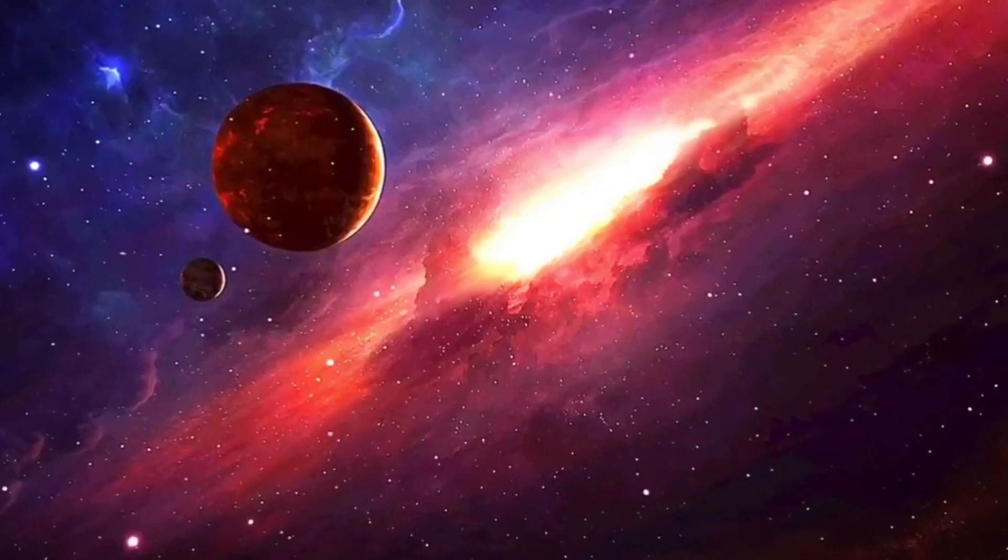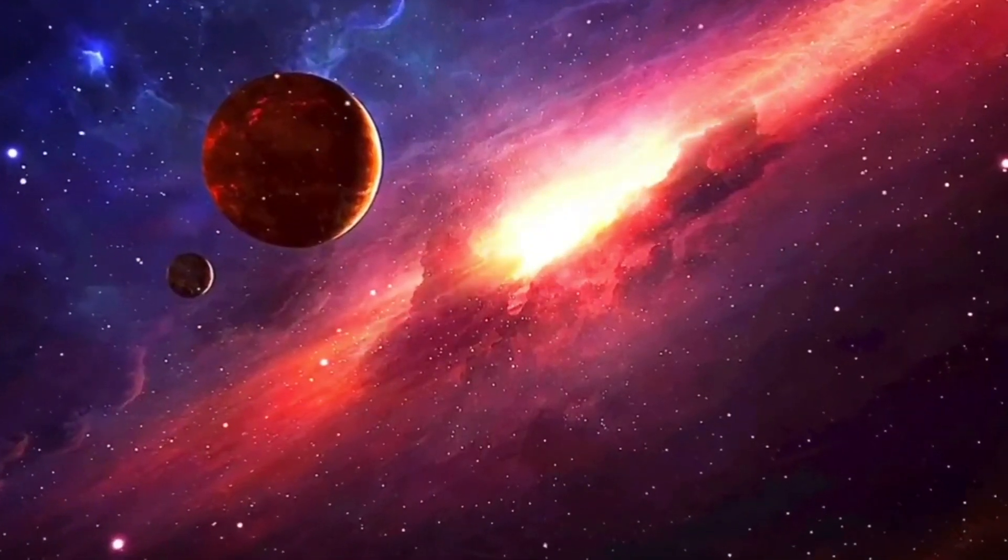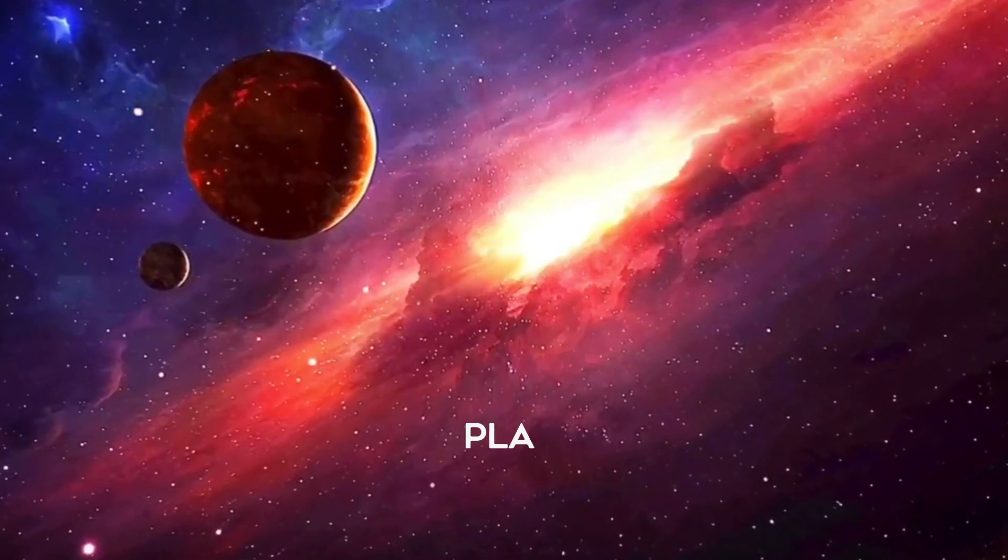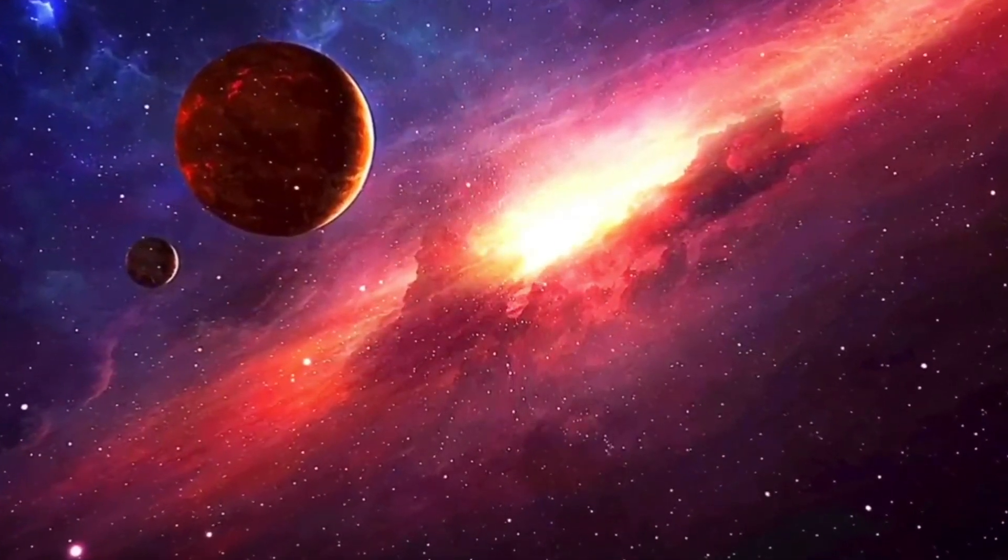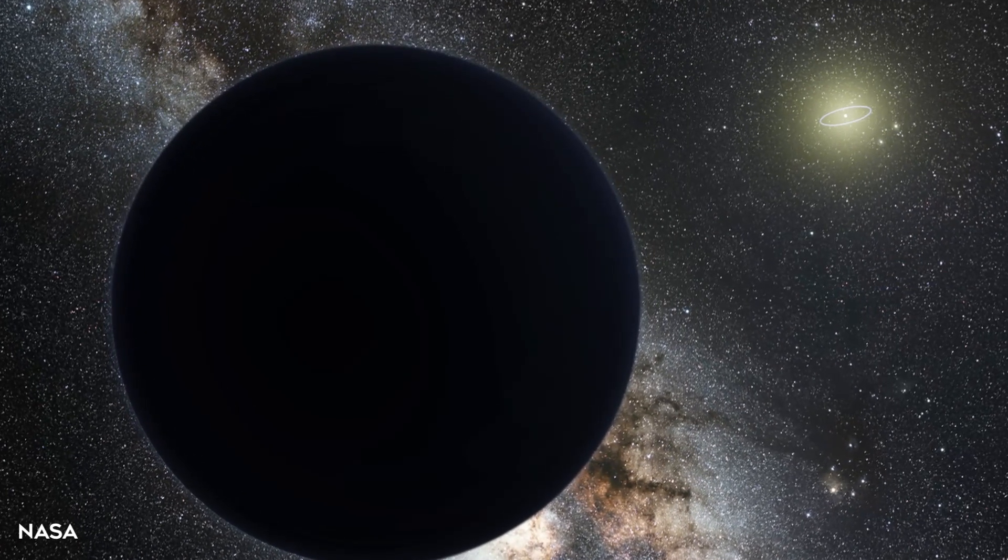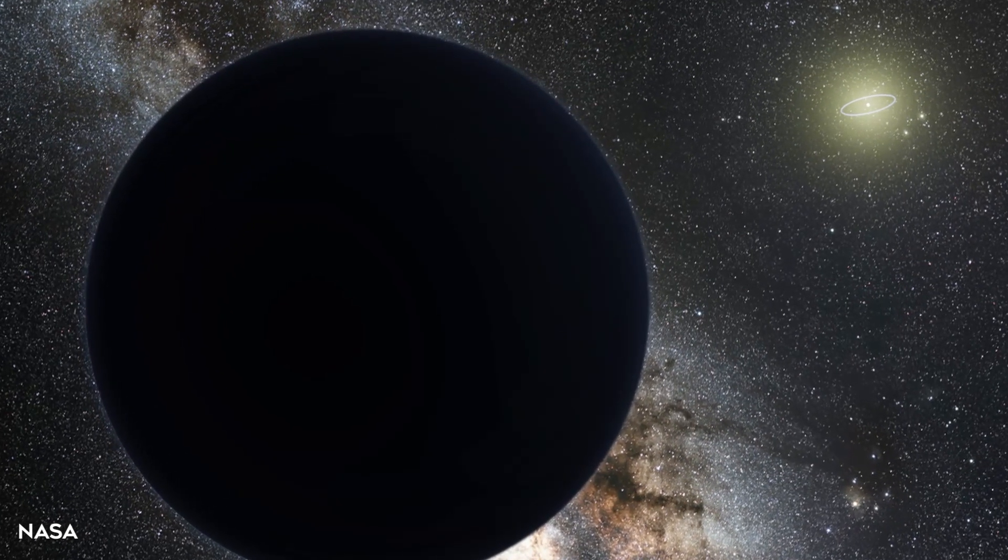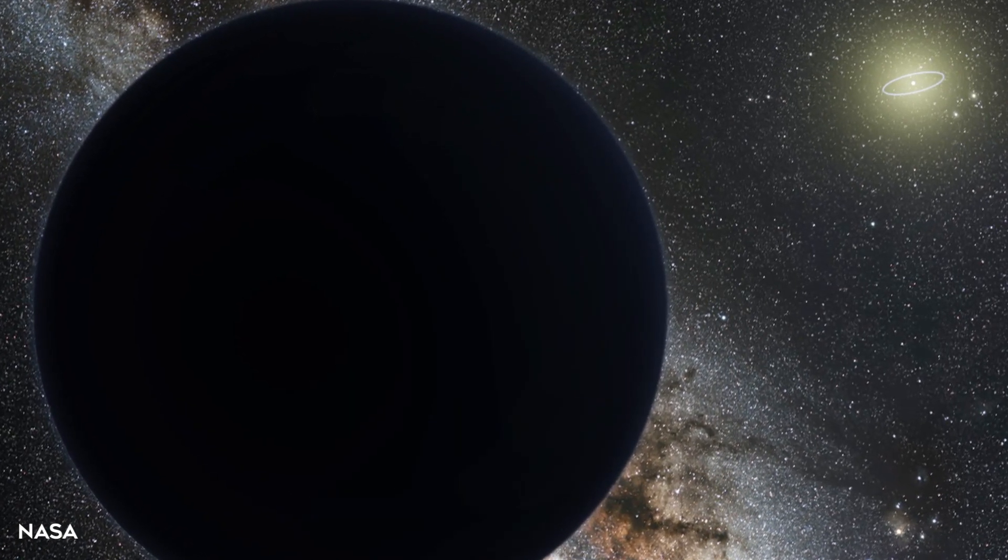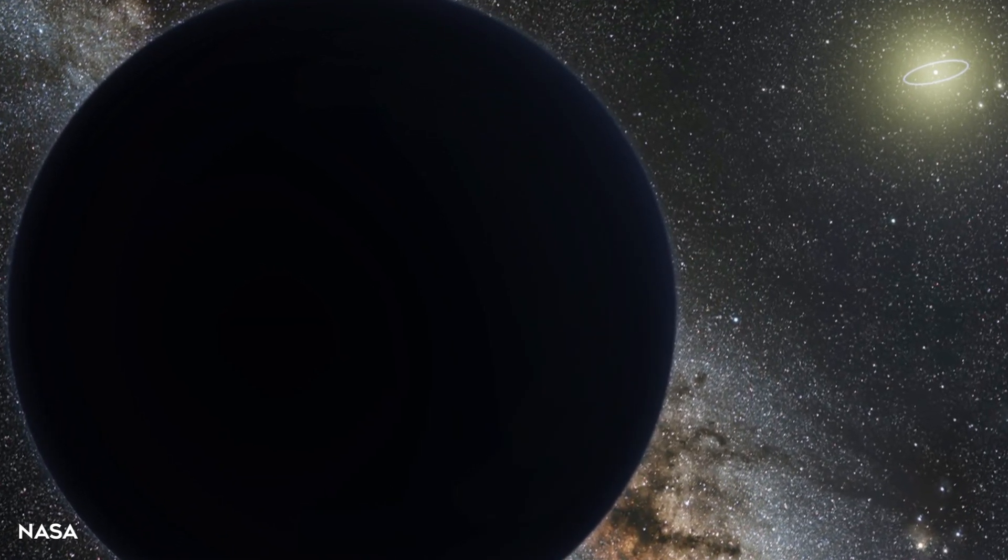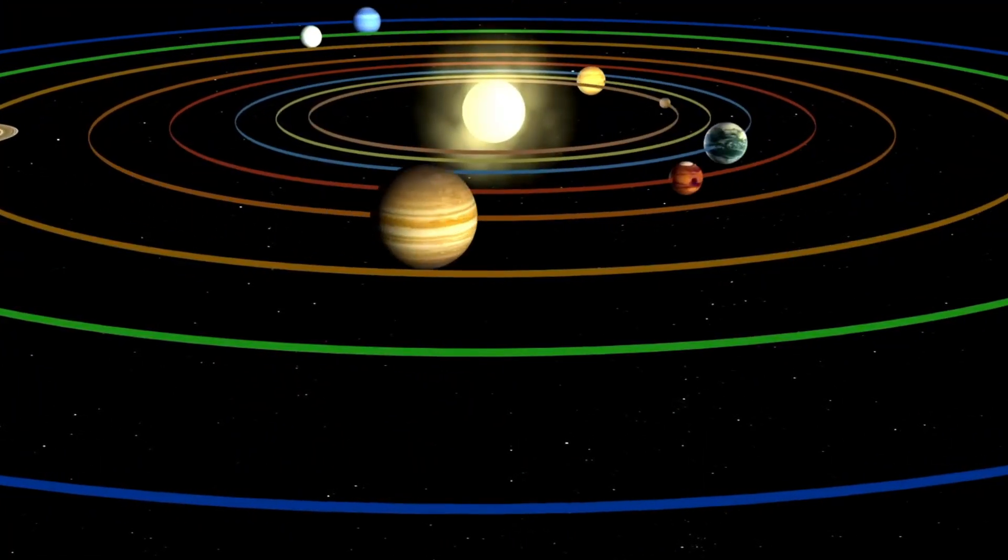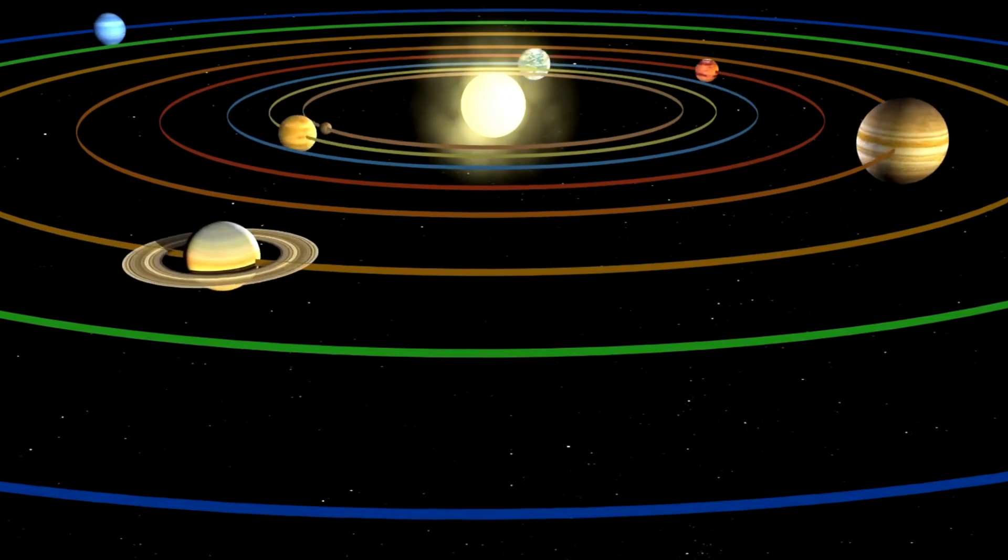Caltech researchers found mathematical evidence suggesting the existence of this Planet Nine, also known as Planet X, deep in the solar system. This hypothetical Neptune-sized planet orbits our Sun in a highly elongated orbit far beyond Pluto. The object, which could have a mass of about 10 times that of Earth, could orbit the Sun about 20 times further on average than Neptune.